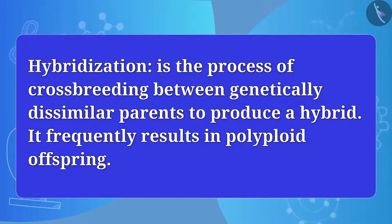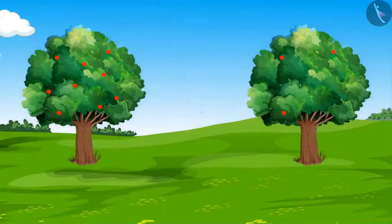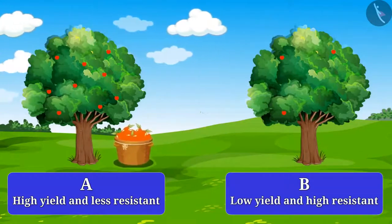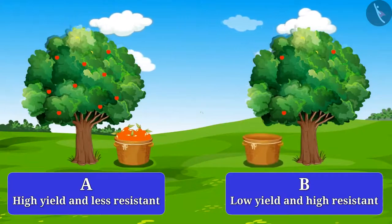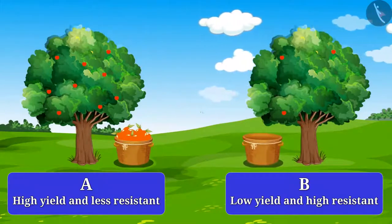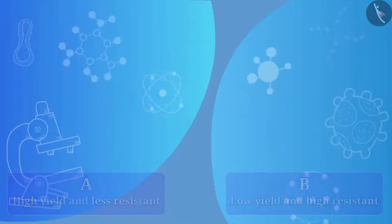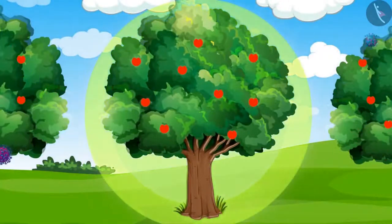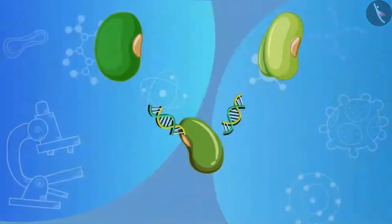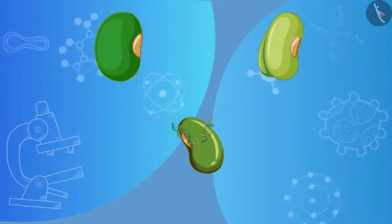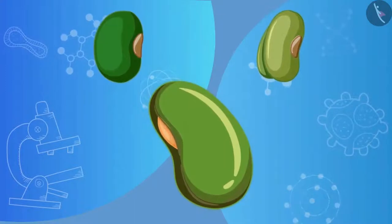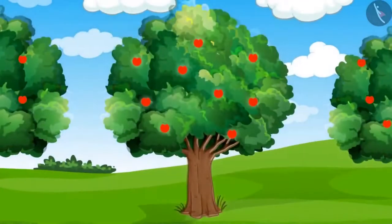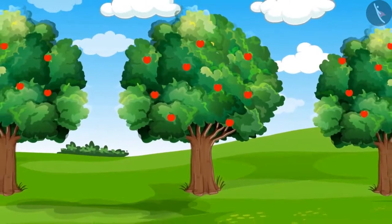Do you know what this hybridization is? Let's understand. Suppose you have two types of trees, A and B. Tree A gives high yield and is less resistant towards disease, while tree B gives low yield and is highly resistant to disease. So what qualities do you need for a good harvest? A tree which has high yield and is highly resistant towards disease. But how can we get these two properties? By hybridization. In this method, scientists treat the seeds of both plants in a scientific manner and create a new seed which has the desired properties of both seeds. So the new tree will have high yield and high resistance towards diseases.